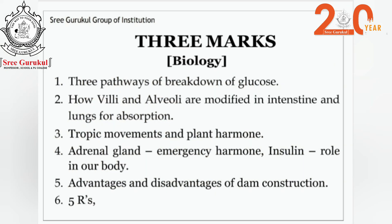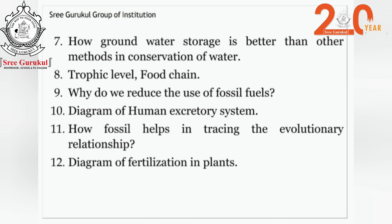For 3-mark questions, expect: three pathways of breakdown of glucose, how villi and alveoli are modified in the intestine and lungs for absorption, tropic movements, plant hormones, adrenal gland (also called the emergency hormone), the role of insulin in our body, advantages and disadvantages of dam construction (most important and most repeated), how groundwater storage is better than other methods for water conservation, trophic levels, food chain, why we should reduce use of fossil fuels, diagram of the human excretory system, how fossils help in tracing evolutionary relationships, and diagram of fertilization in plants.